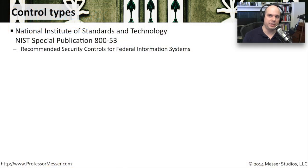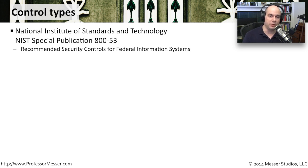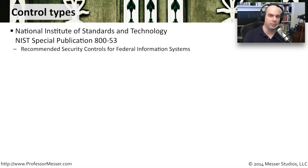A good place to start the conversation about risk is with control types. The National Institute of Standards and Technology is a federal organization in the United States that comes up with standards used not only for the federal government, but also nationally and even worldwide. They have a set of standards called the NIST Special Publication 800-53, which is a publication called the Recommended Security Controls for Federal Information Systems.